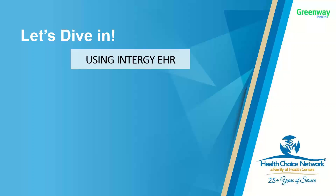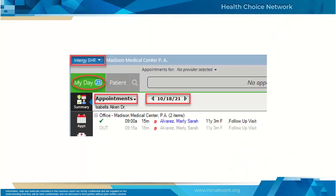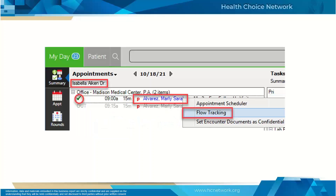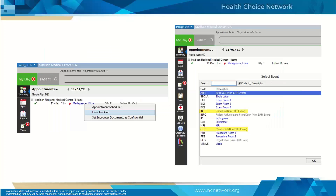Now let's look at that same example inside of the Intergy EHR. From your My Day screen, under Appointments, find the patient that you're looking to check in or check out. Right click on that patient and go to Flow Tracking. That will open the flow tracking menu — select the code for In or Out, whichever is appropriate.